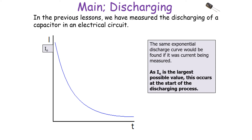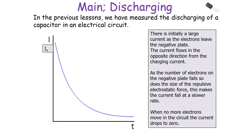The same exponential discharge curve will be found if current is being measured. I0 is the largest possible value, occurring at the start of the discharging process — there is initially a large current as electrons leave the negative plate, and this current flows in the opposite direction from the charging current. As the number of electrons on the negative plate falls, so does the repulsive electrostatic force, making the current fall at a slower rate as it becomes more difficult for electrons to leave the plate. Eventually, when no more electrons move in the circuit, the current drops to zero.